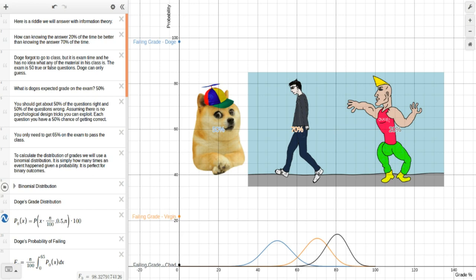So to calculate the distribution of grades for Doge, I've used a binomial distribution, which is very simple. It is how many times something happens given a probability, simple for flipping a coin or determining how often a six comes up if you roll the dice. Very simple. It happens or it doesn't happen.